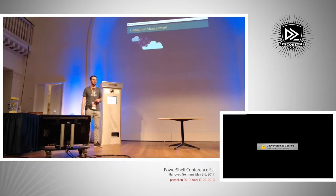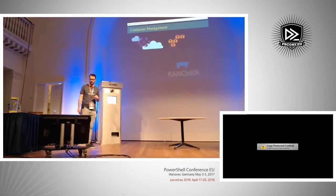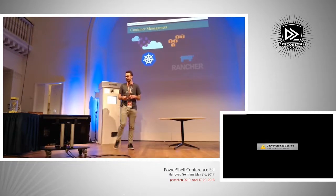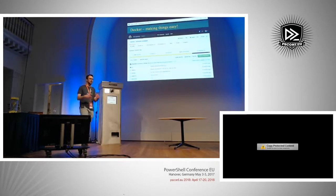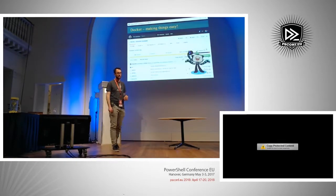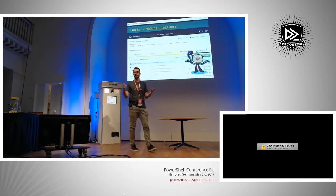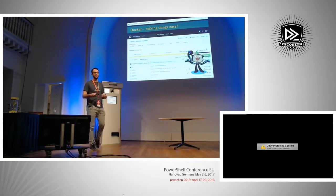In the container management and orchestration space, there are a few different tools. Azure has the Azure Container Service, Amazon has the Elastic Container Service, there's Rancher which is a really awesome container management and orchestration platform, and Google's Kubernetes. These are the four big ones at the moment that will really get you going in the container space. Docker can also abstract complexity from GitHub projects — sometimes you find a really cool project but it's written in C++ and you have no idea how to use it. Docker lets you understand software at a higher layer and run applications more easily.